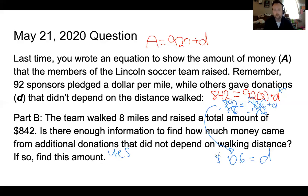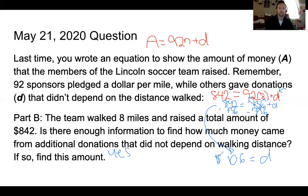Then 842 minus 736 equals 106. So it's asking if there's enough information to figure out — given the total amount and the miles walked — how much came in from additional donations. And we do: D equals $106. So there you go — have a great rest of your day!